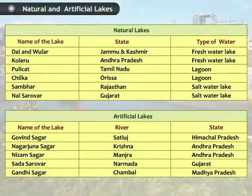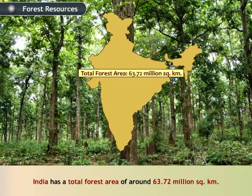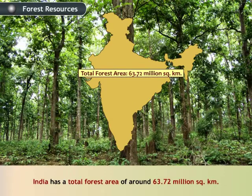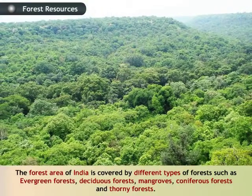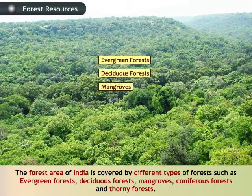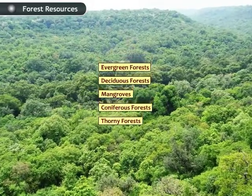The following table lists the natural and artificial lakes of India. India has a total forest area of around 63.72 million square kilometers and the percentage of forests is about 19.39%, which is low compared to other countries. The forest area of India is covered by different types of forests such as evergreen forests, deciduous forests, mangroves, coniferous and thorny forests. Let's look at each of these forests in detail.